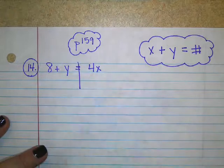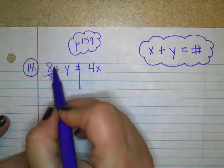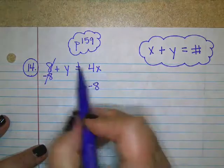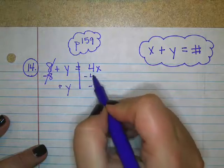So if I just start off by moving those around, I would subtract that 8. The Y is okay. And then I would move that 4X.